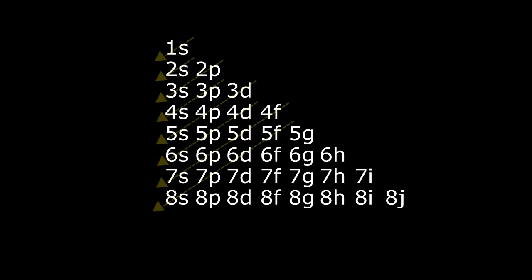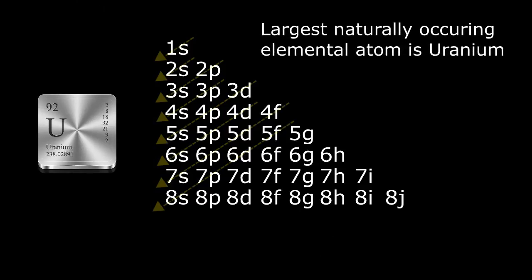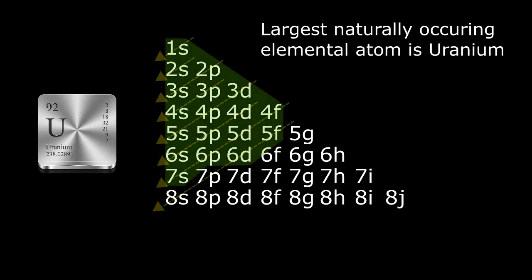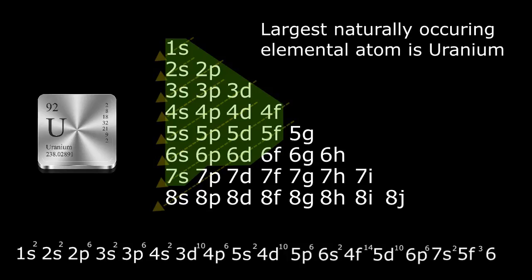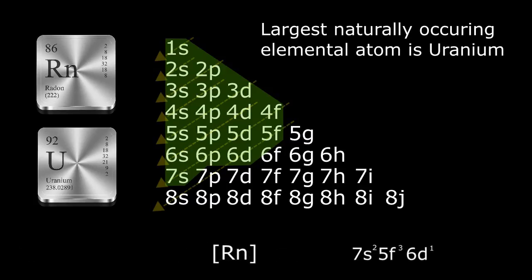Therefore, when writing out the electron configuration of each element, we can either start from the beginning and include every subshell from shell 1 on, or we can abbreviate the nomenclature using the previous noble gas in parentheses and listing just the outer valence electrons of the element itself. For instance, the largest naturally occurring elemental atom is uranium. With 92 electrons, the entire electron configuration is 1s², 2s², 2p⁶, 3s², 3p⁶, 4s², 3d¹⁰, 4p⁶, 5s², 4d¹⁰, 5p⁶, 6s², 4f¹⁴, 5d¹⁰, 6p⁶, 7s², 5f³, 6d¹. We can abbreviate using the previous noble gas radon and simply listing the valence electrons: [Rn] 7s², 5f³, 6d¹. Since the chemical, electrical, and magnetic properties are predominantly defined by the outer valence electrons, this is probably a more practical descriptor.